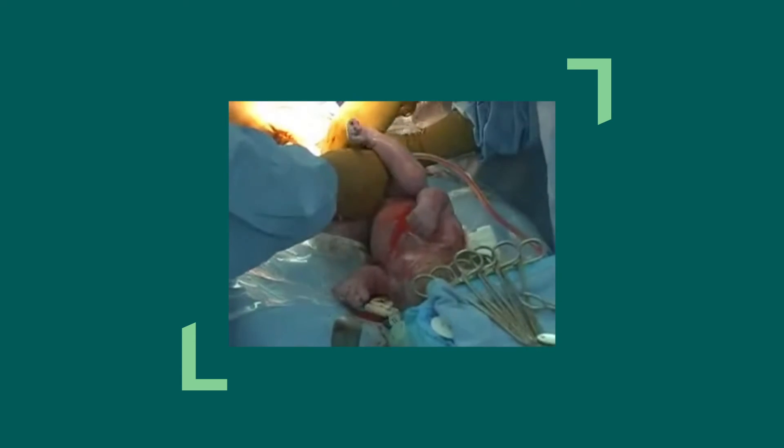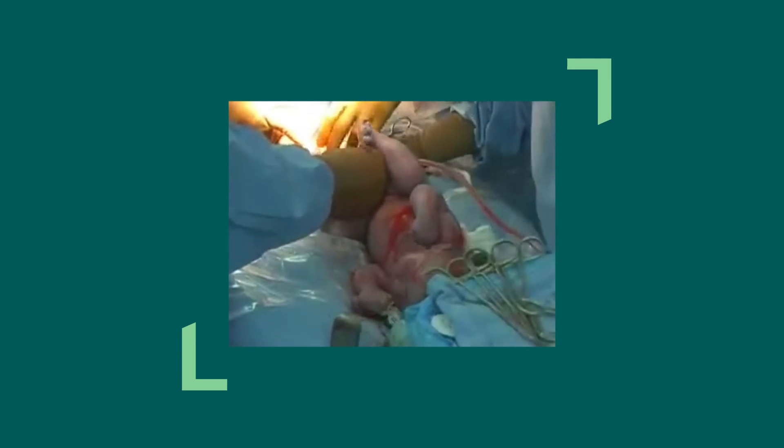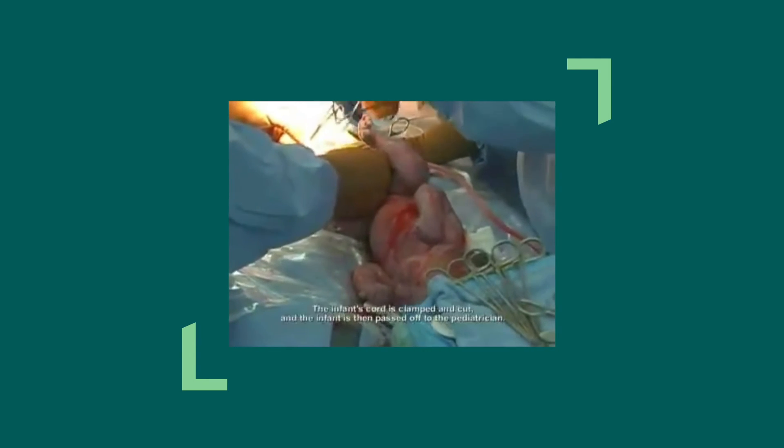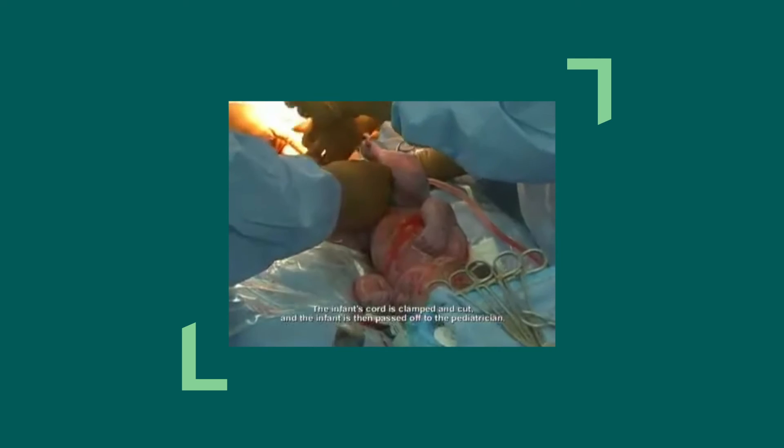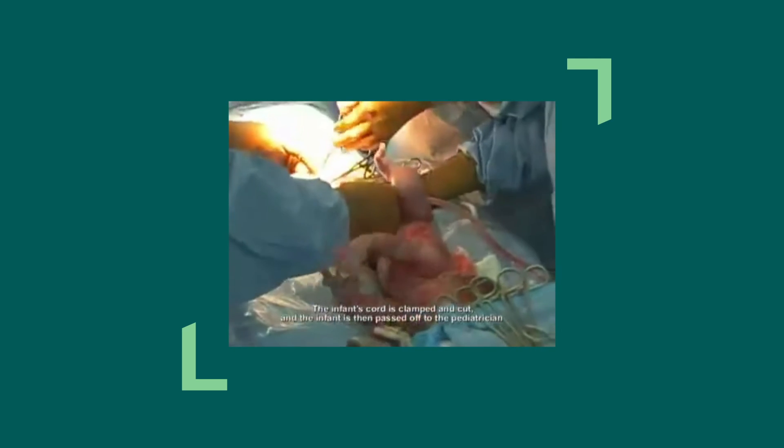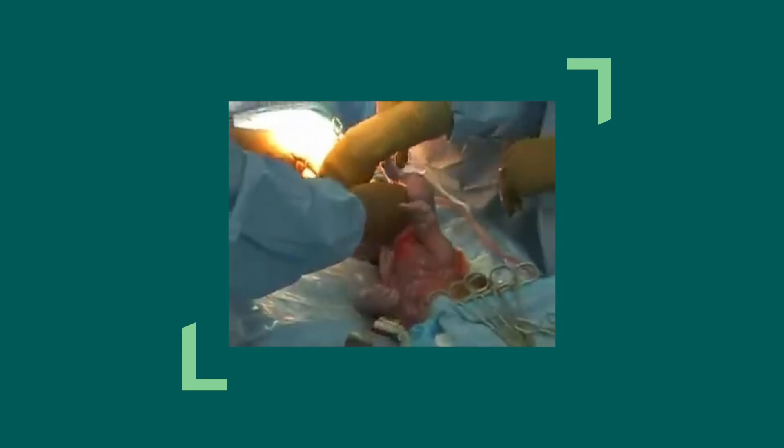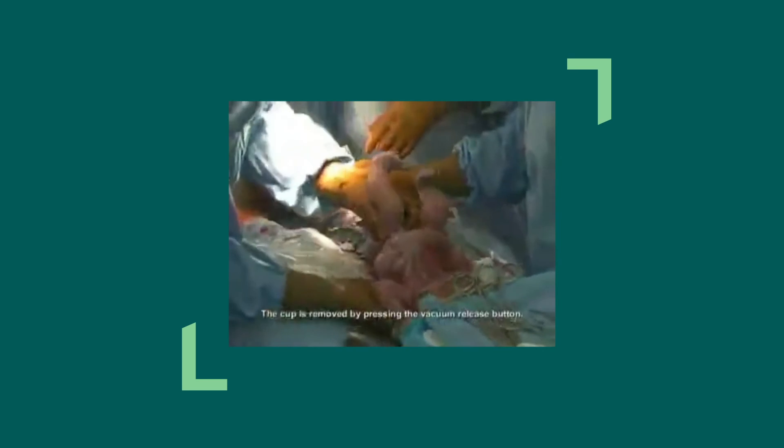After the infant is delivered, the infant's mouth is suctioned. The infant's cord is clamped and cut, and the infant is then passed off to the pediatrician. The cup is removed by pressing the vacuum release button.